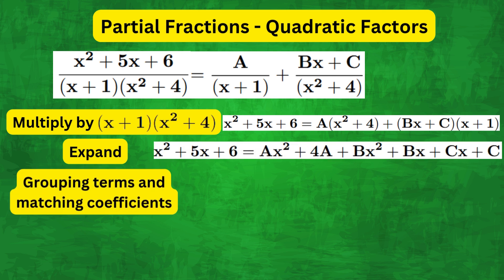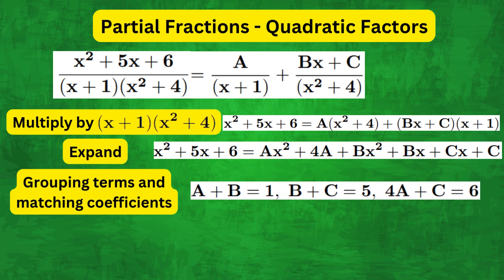Grouping all the terms and matching coefficients we have A + B = 1, B + C = 5, and 4A + C = 6.